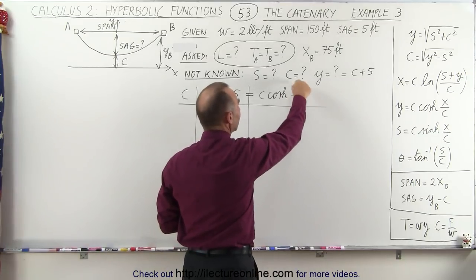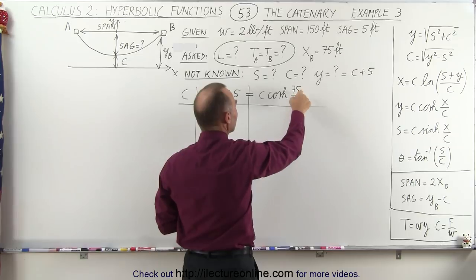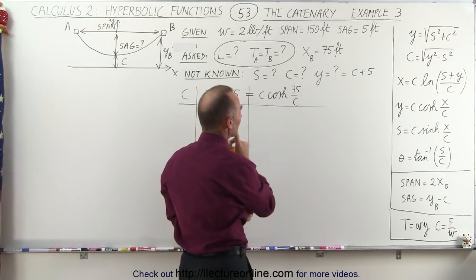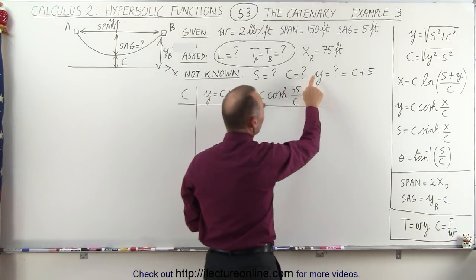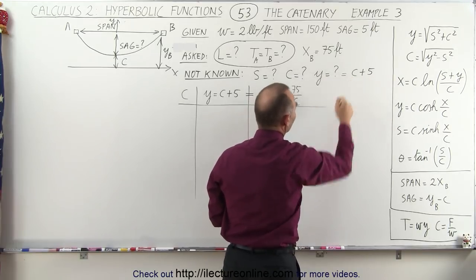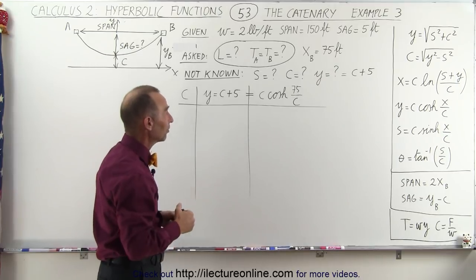One here in the so-called angle belonging to hyperbolic cosine, or the number here belonging to hyperbolic cosine, and once again in front. So if we're going to find c we really need to find y because we know that y is equal to c plus 5. So once we find y we can find c and vice versa. So it's kind of an iterative process.